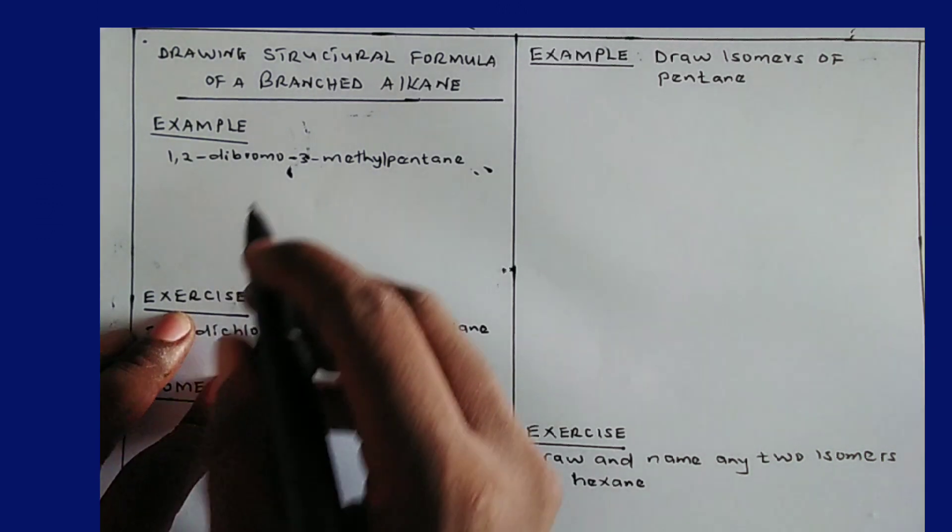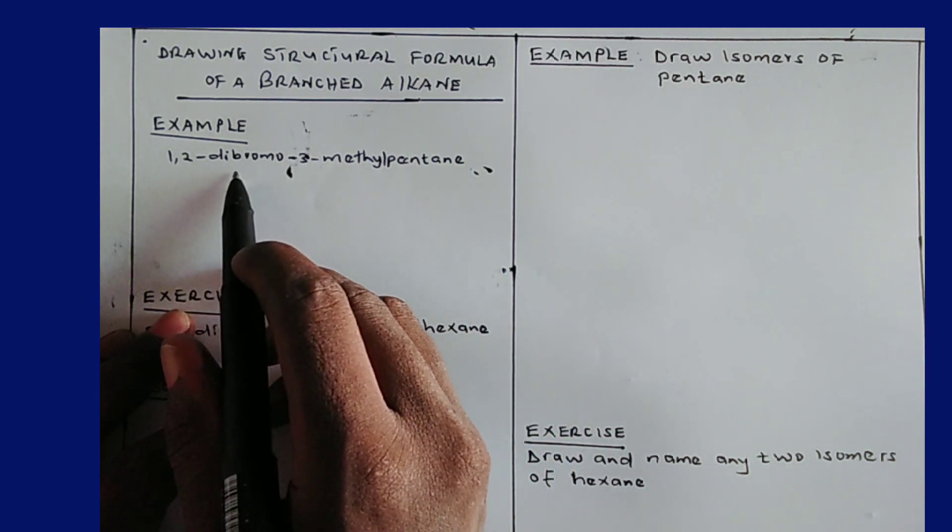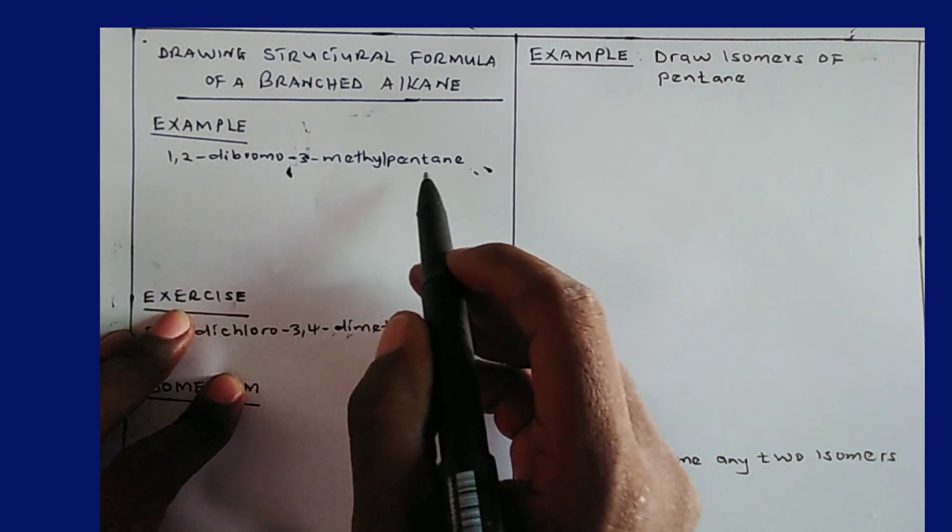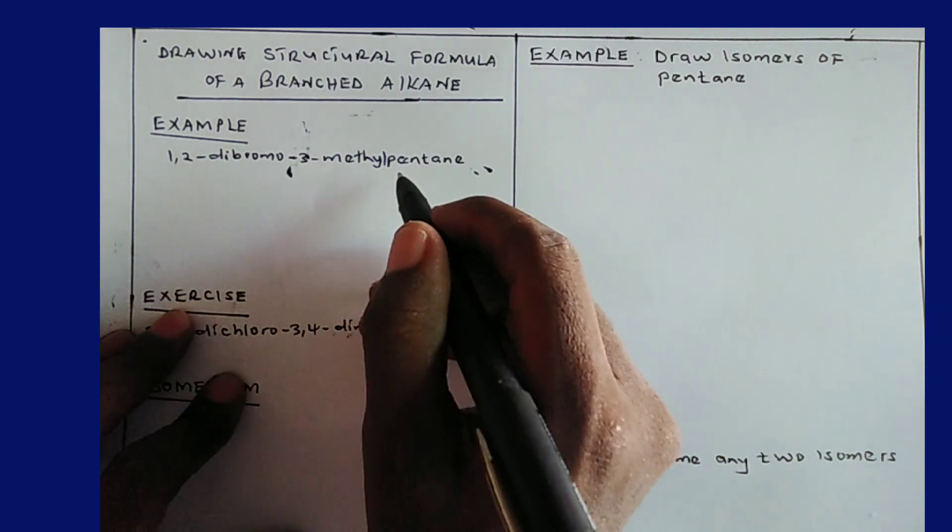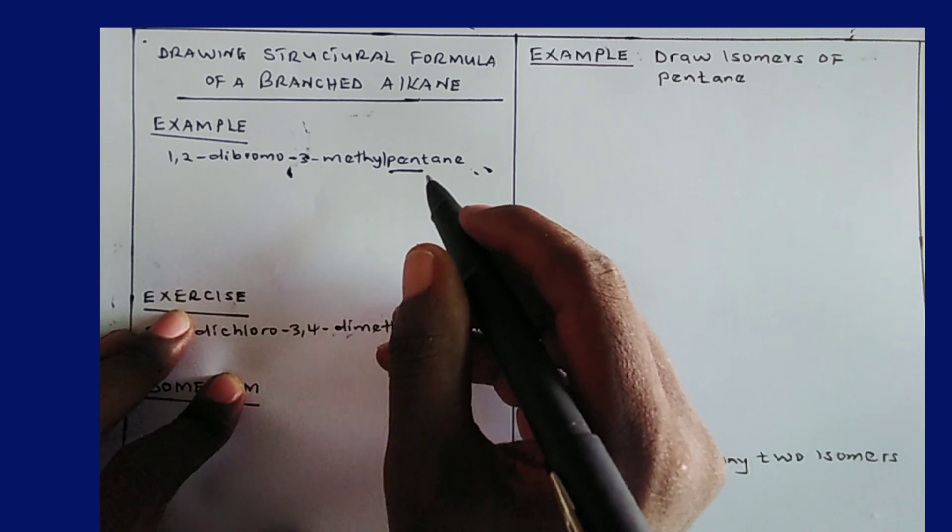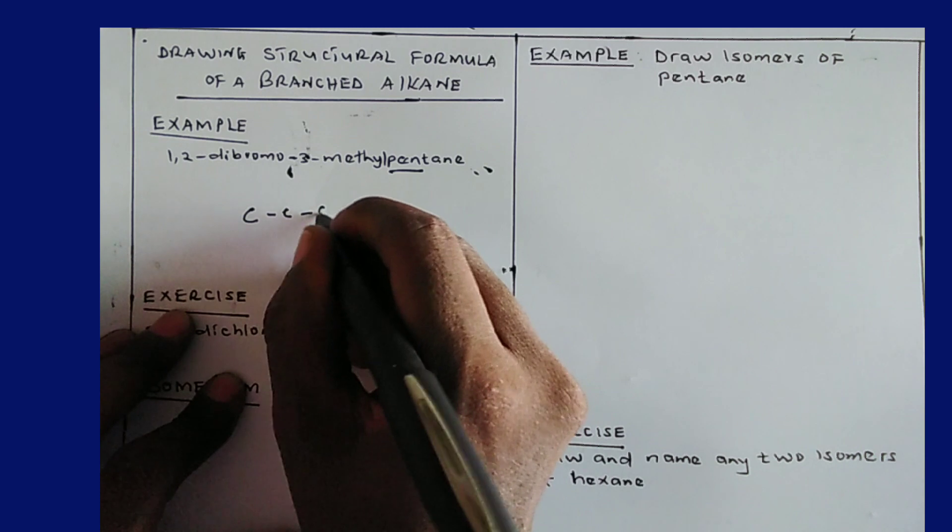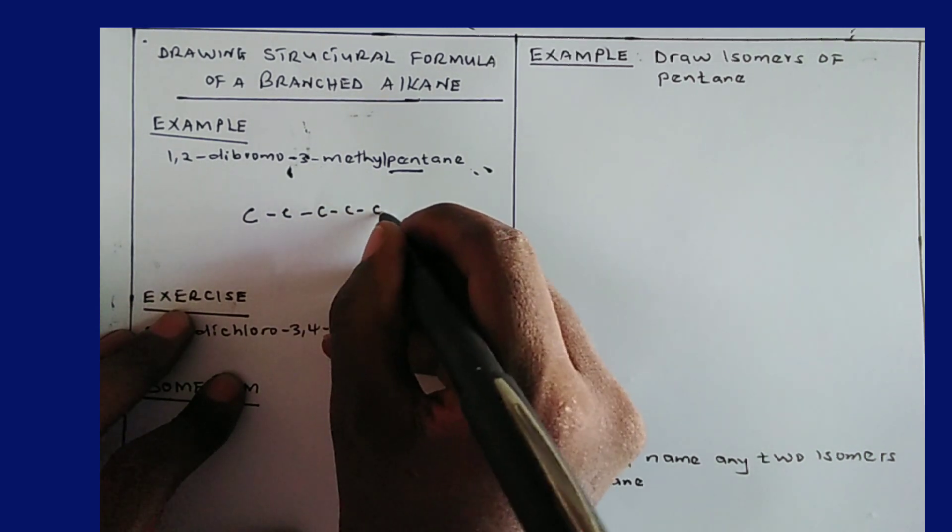Now in our example number one here, let's draw the structural formula of 1,2-dibromo-3-methyl pentane. So we begin first of all by pentane here. Pent means five carbon atoms. So I draw five carbon atoms joined with single bonds because it is an alkane.